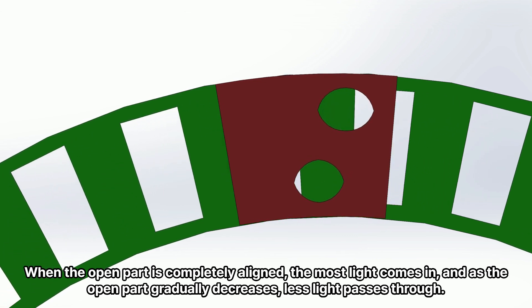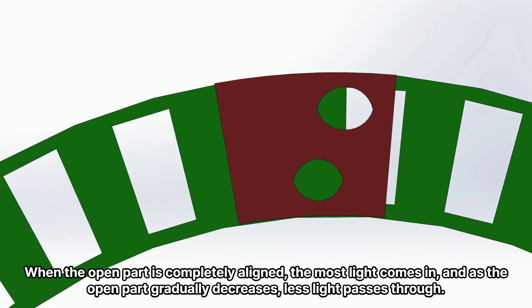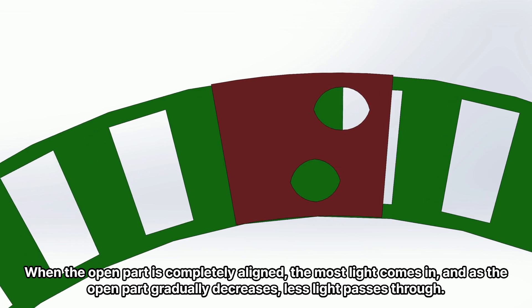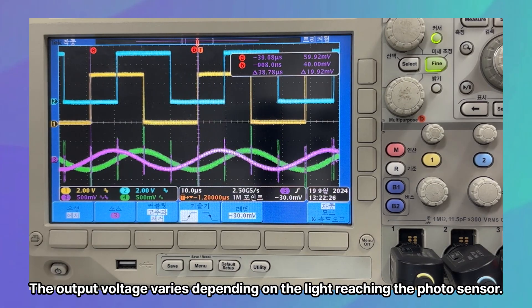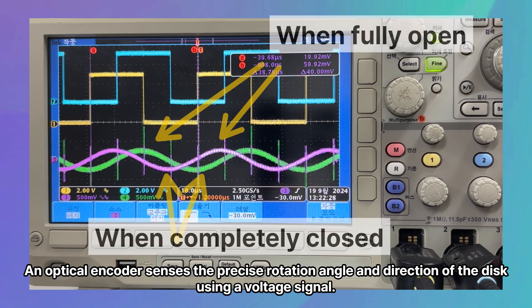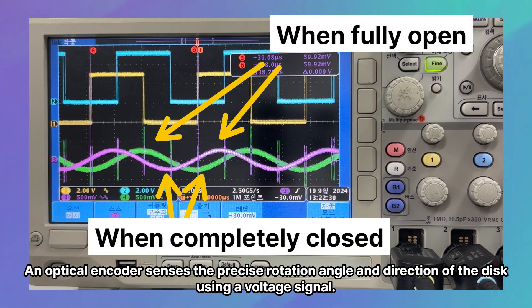When the open part is completely aligned, the most light comes in, and as the open part gradually decreases, less light passes through. The output voltage varies depending on the light reaching the photosensor. An optical encoder senses the precise rotation angle and direction of the disk using a voltage signal.